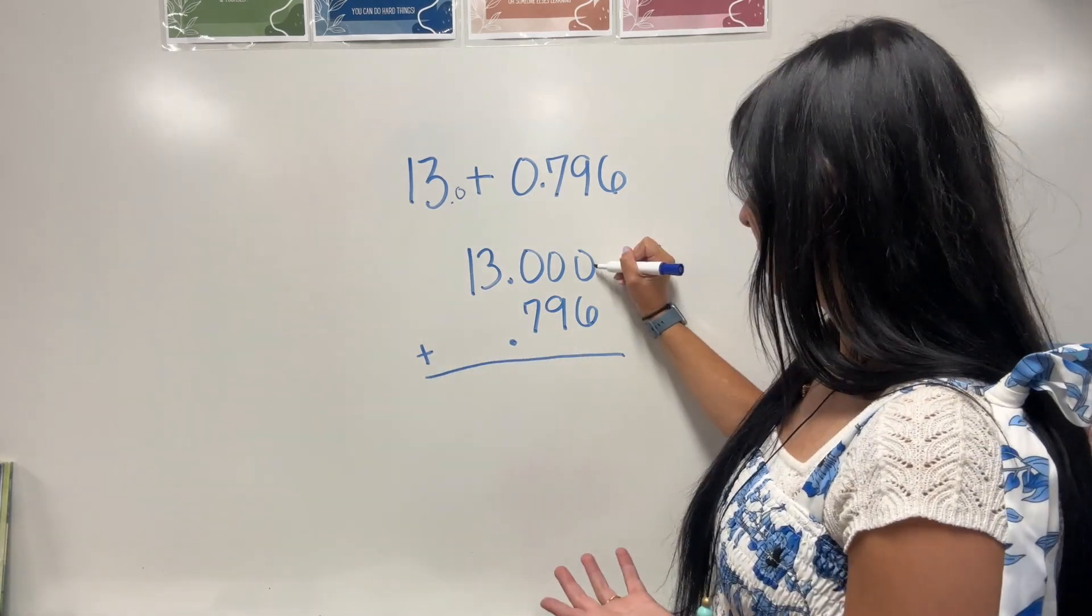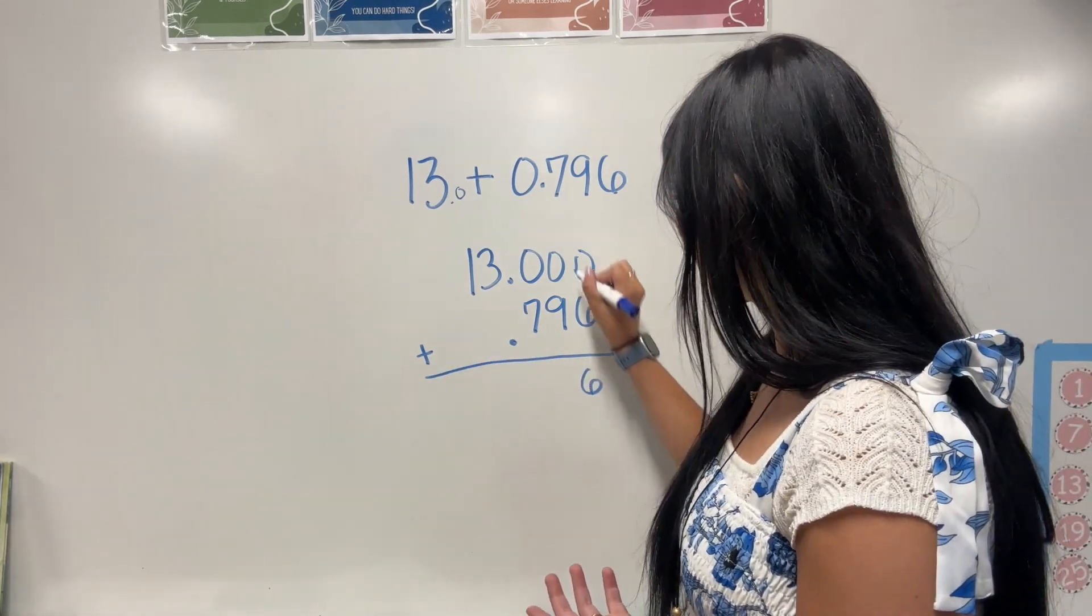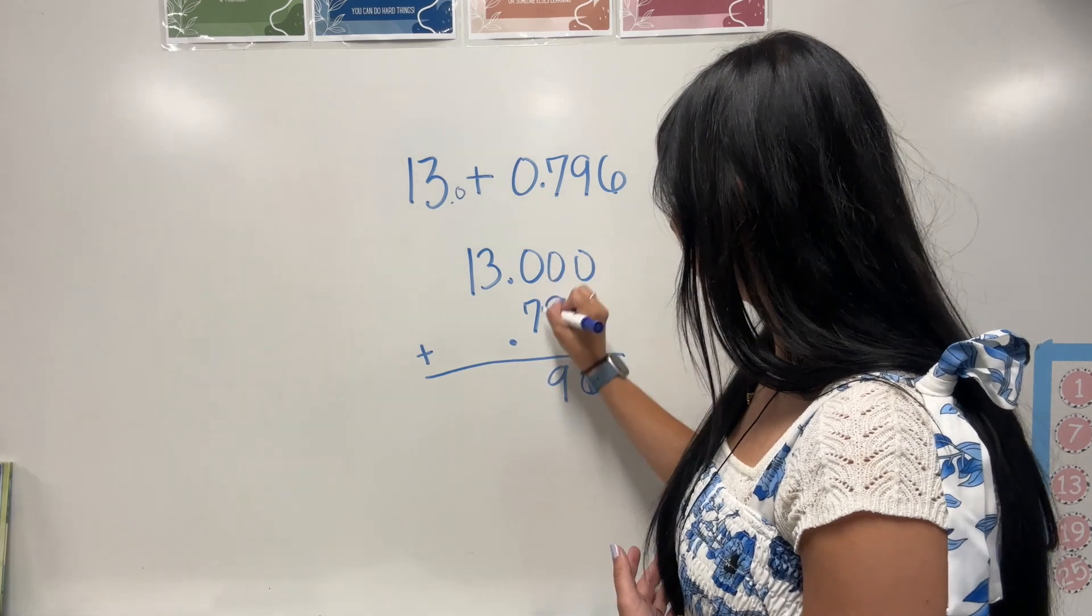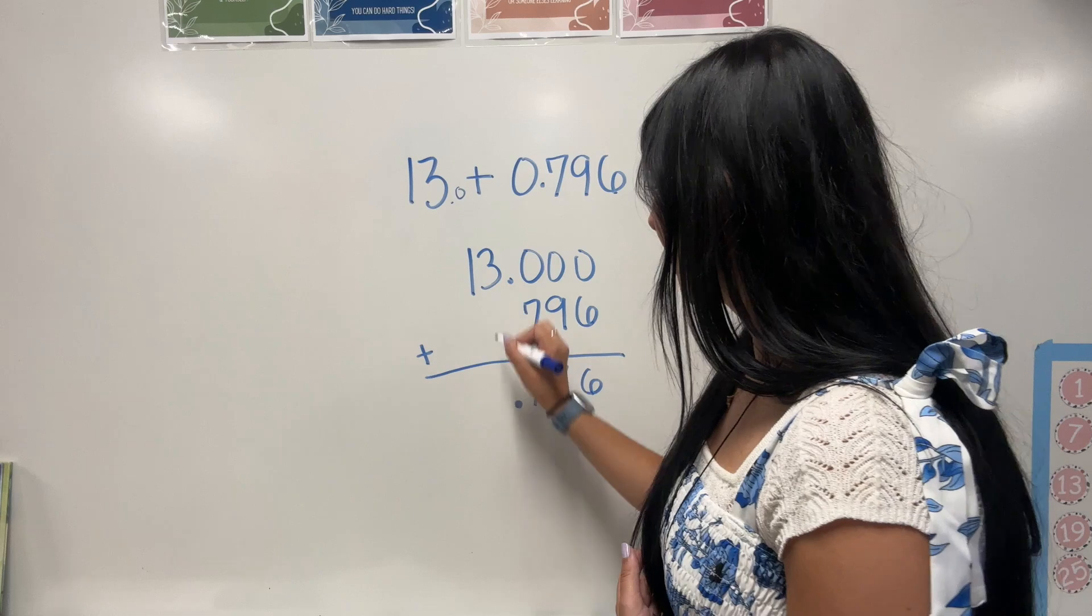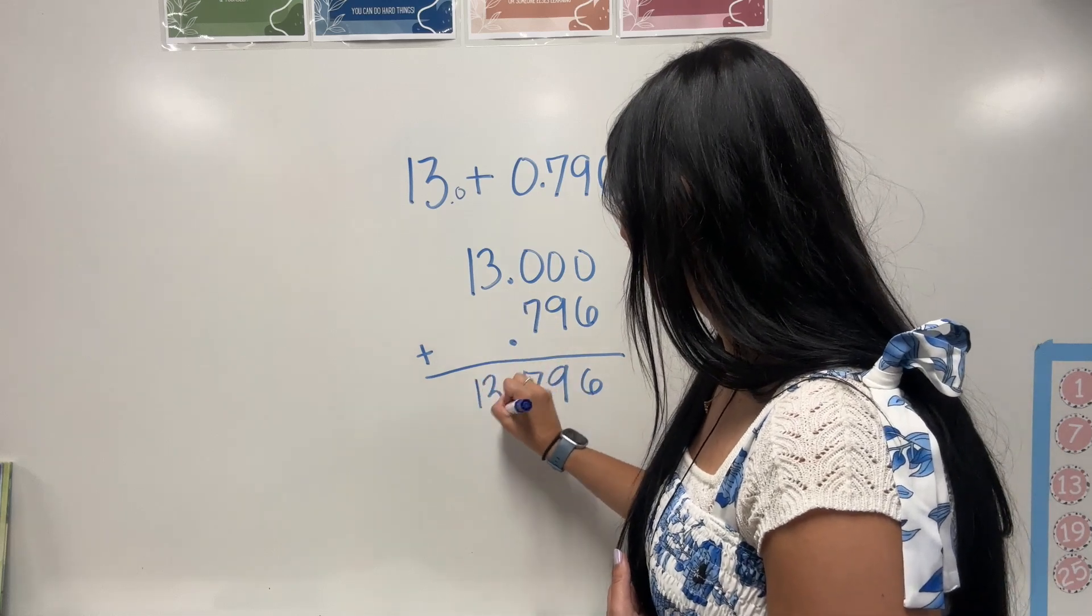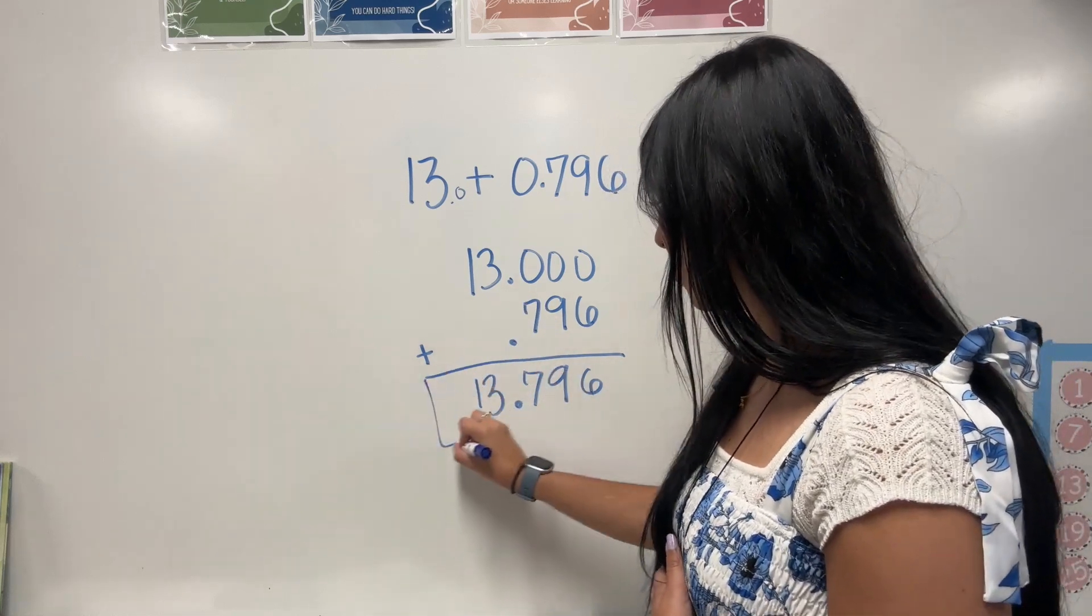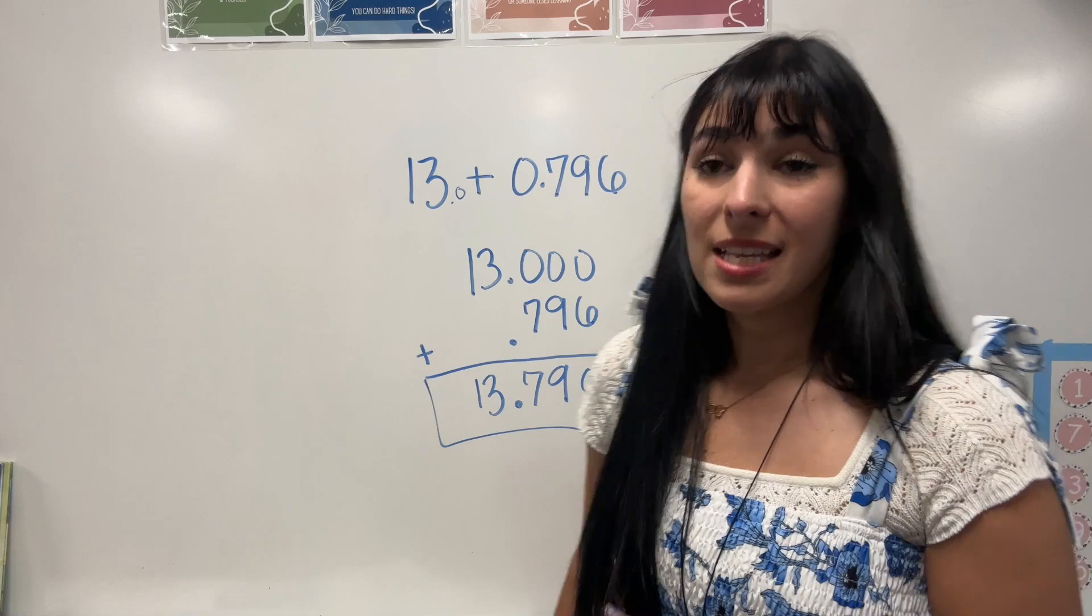And now we're going to add 0 plus 6, 6, 0 plus 9, 9, 0 plus 7. Decimals in place so they all line up. And then we're going to bring down that 13. So our answer should be 13.796.